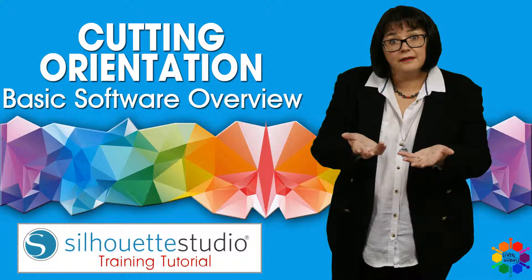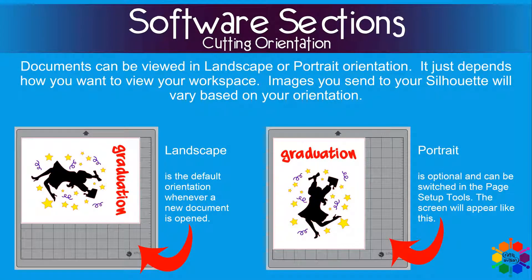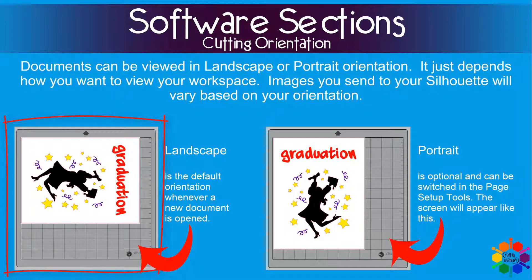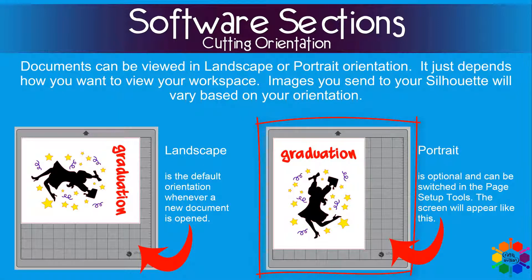Cutting orientation. Your documents can be viewed in a landscape or portrait orientation, depending on how you want to view your workspace. Images you send to the Silhouette Cameo machine vary based on the orientation you chose. The landscape orientation is normally the default whenever a new document is opened, and the portrait orientation is an optional one you can change in your page setup tools, which I will explain a bit later.